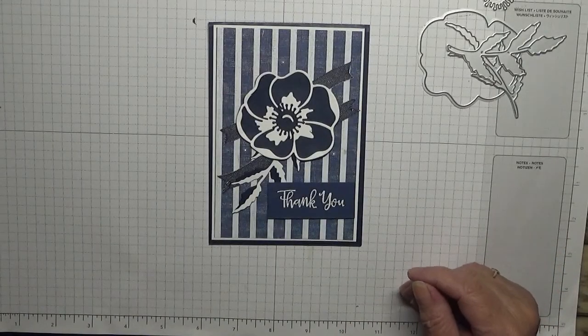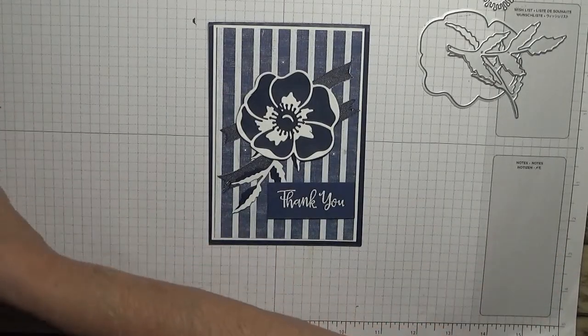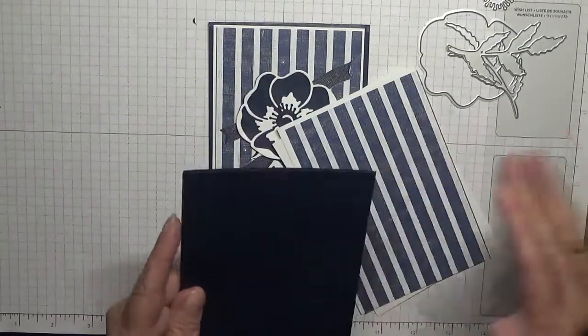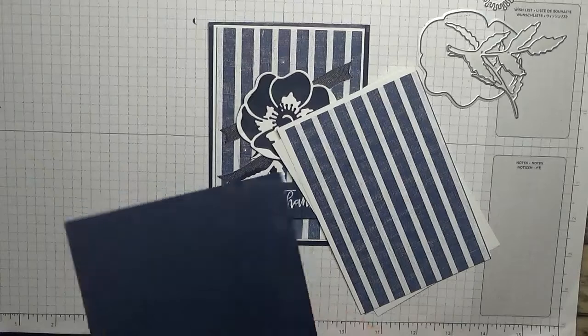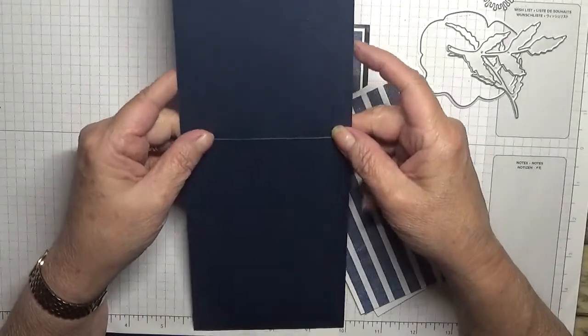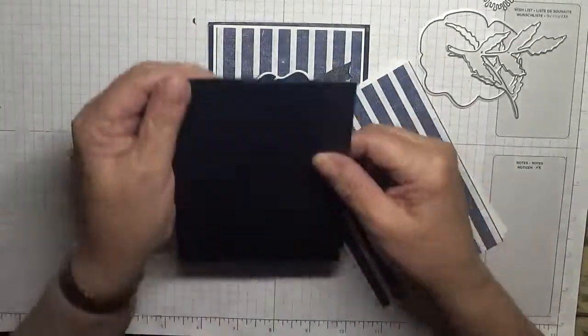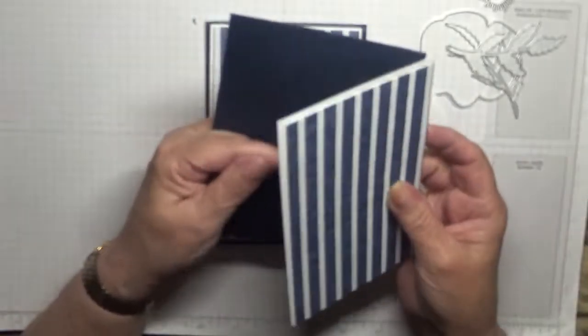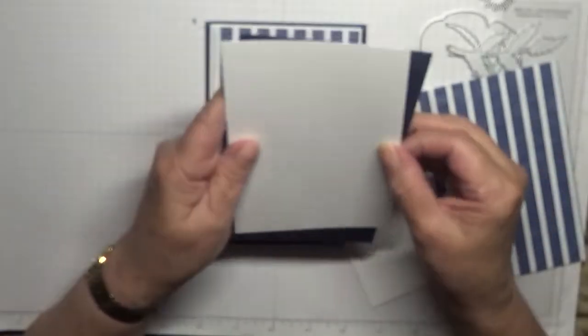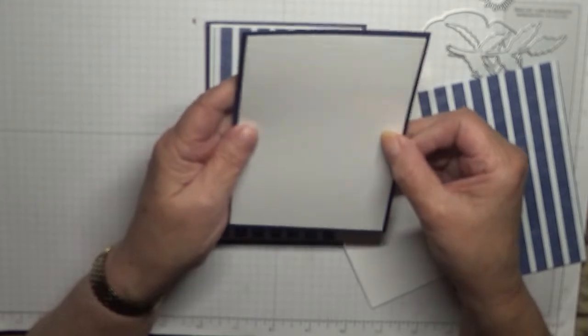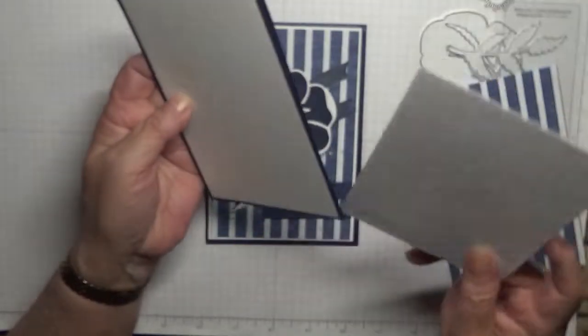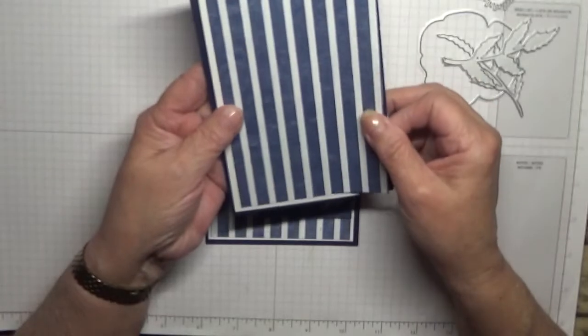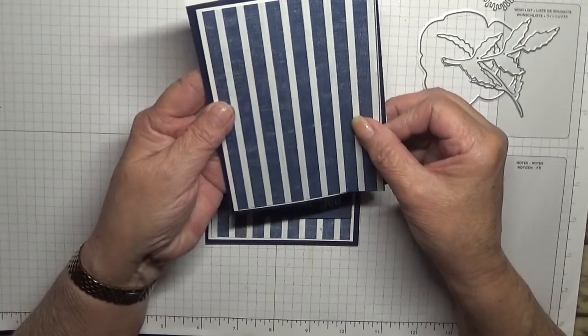I have got card base of Night and Navy of eight and a quarter, no eleven and three quarters scored at five and seven-eighths folded in half and it's four and one-eighths wide. I've got two pieces of white cardstock five and five-eighths by three and seven-eighths, one for the inside and one for the front and a piece of DSP this is from the Sailing Home paper stack.